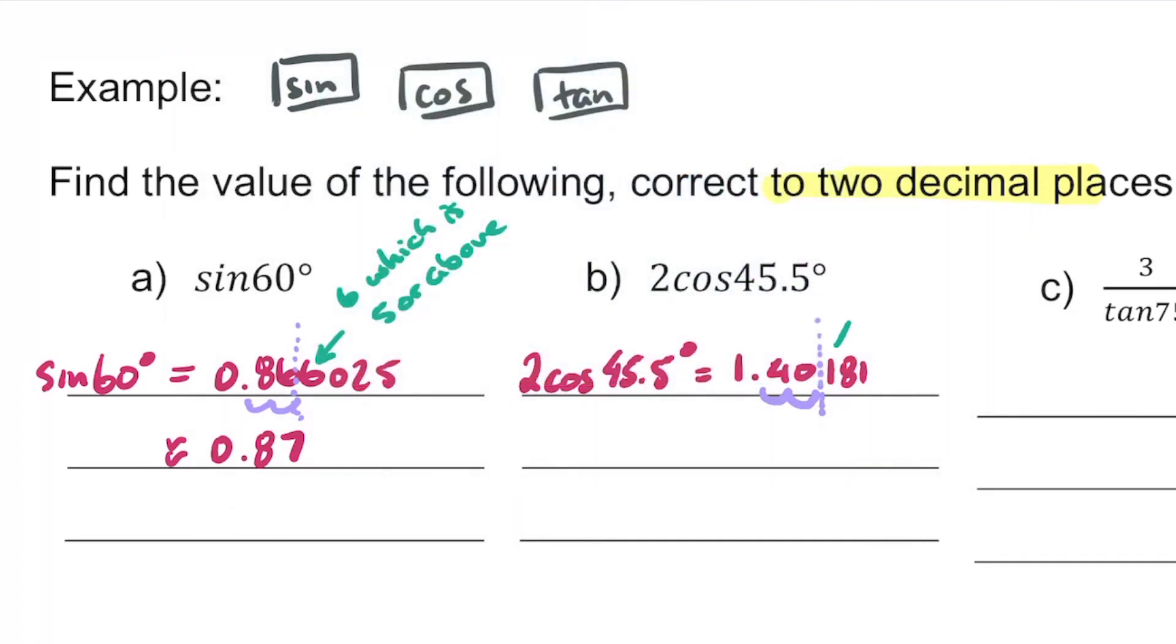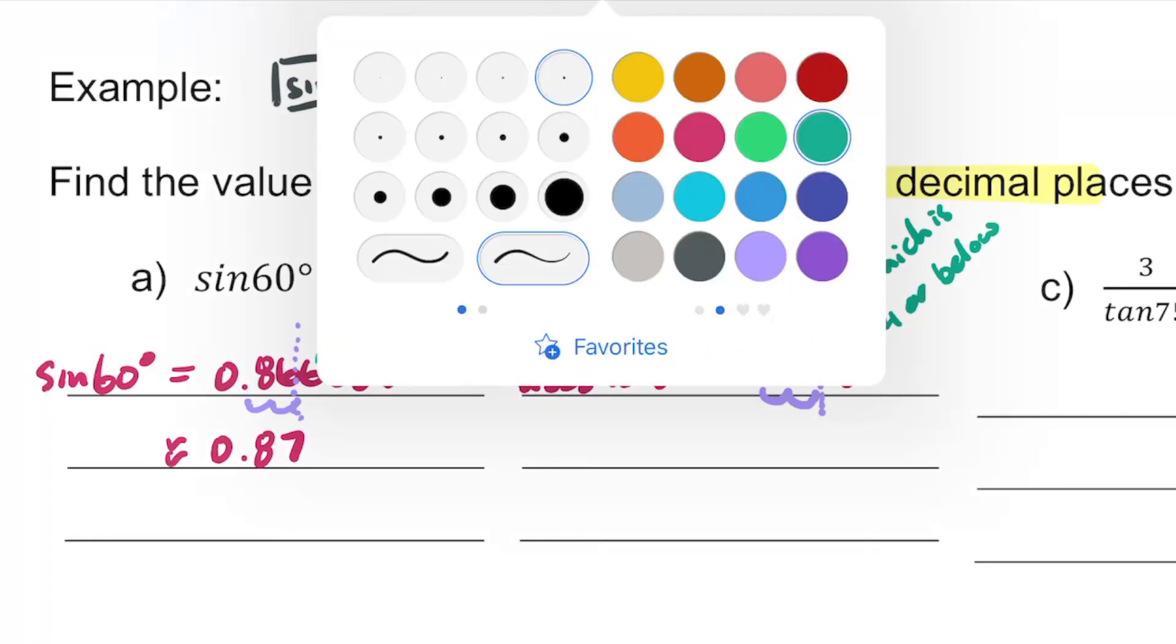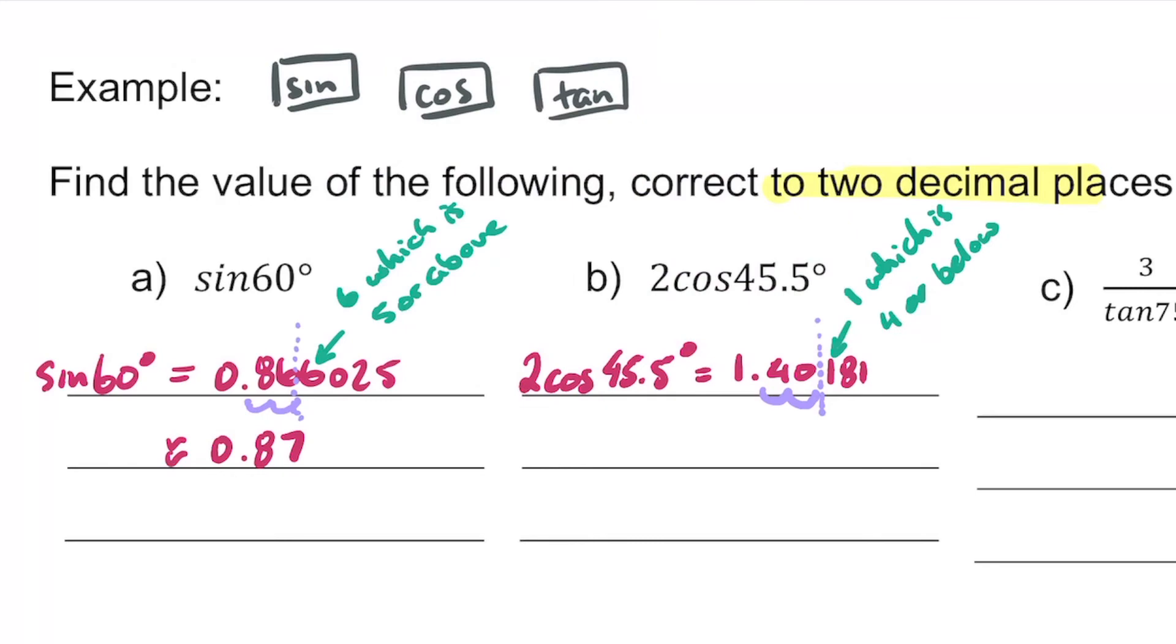Again we have too many decimal places so I'm going to go one, two, and do my little dotted line. I look at that number there, this one is a one, which is four or below in that category. So what does that mean for our zero? Our zero is going to stay the same, it's not going to be affected at all. We are going to get 1.40 and it is absolutely fine to finish off a problem with a decimal place that has a zero in it because we have been asked specifically for two decimal places.